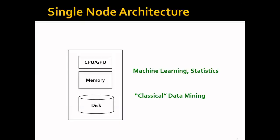Traditionally, when we do machine learning, statistics, or classical data mining tasks in a single machine, we'll usually store the data on the local disk, load the data from the local disk to the main memory, and use CPU or GPU to do the computation.